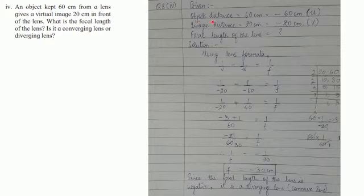What is given to us is the object distance 60 centimeters using sign conventions, it will be minus 60 centimeters. Image distance is given 20 centimeters but because it is a virtual image on the same side as the object and in front of the lens, it will be minus 20 centimeters.